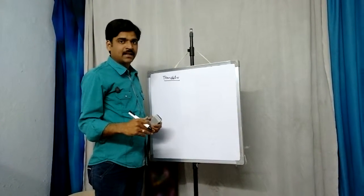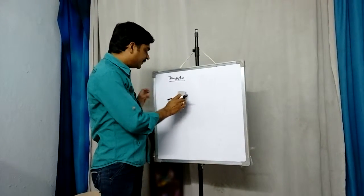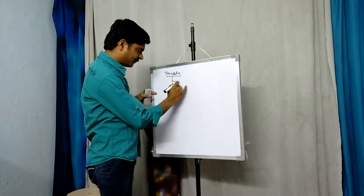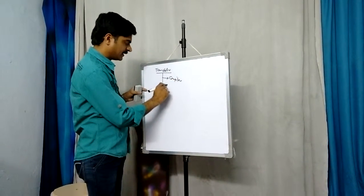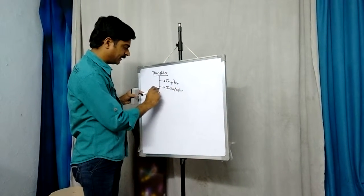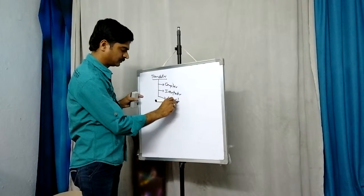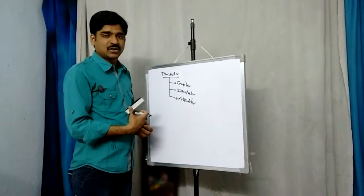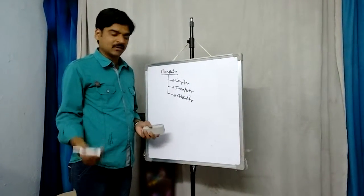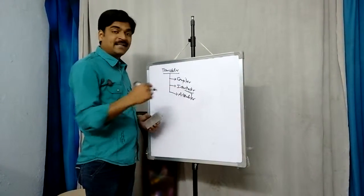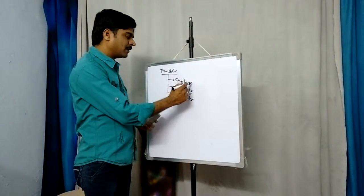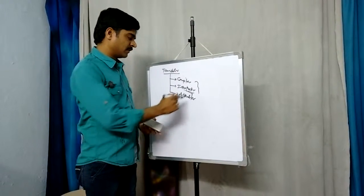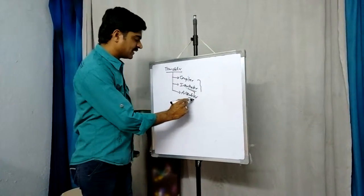which is used to convert a normal program into object code. There are different types of translators: compiler, interpreter, and assembler. A compiler converts the entire program at a time into object code, whereas an interpreter converts line by line. Among these two, the compiler takes more time to convert normal English to object code, whereas the interpreter takes less time.